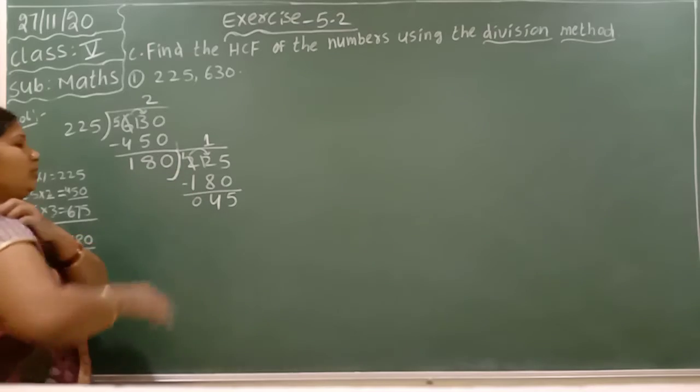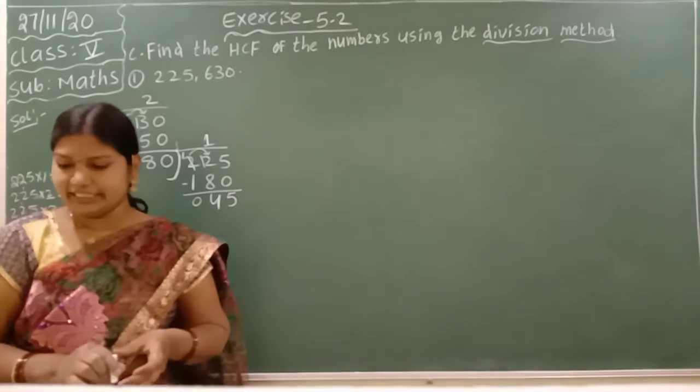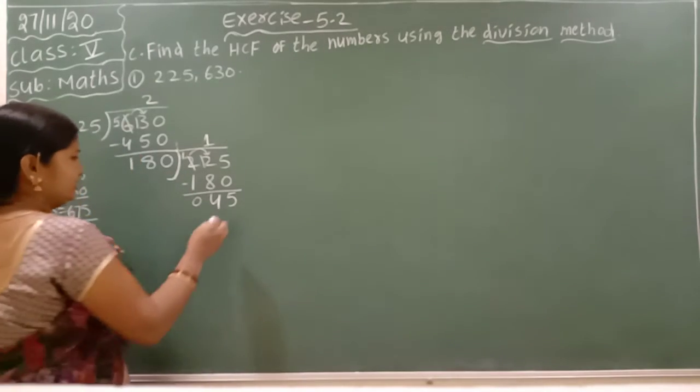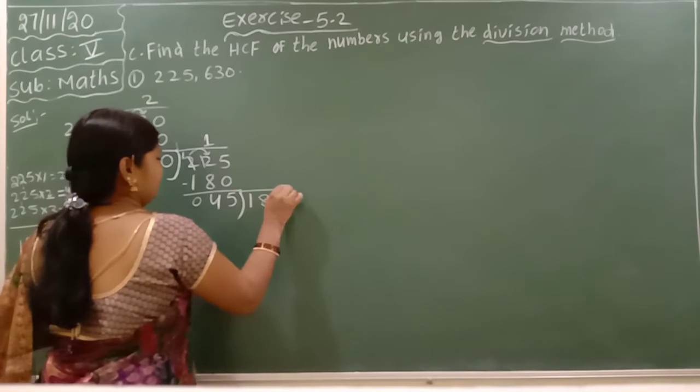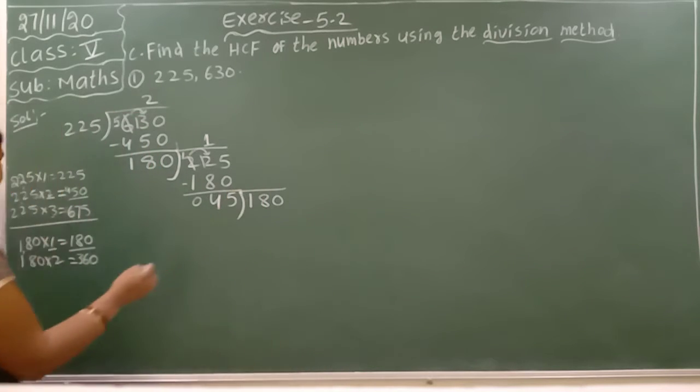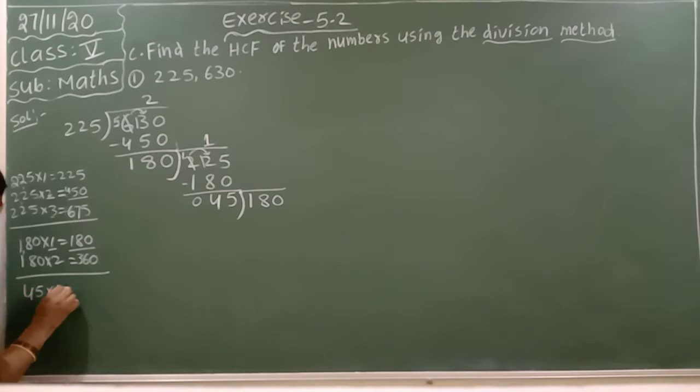45 to do one more time, subtraction here. Now we have to write the 45 table. 45 times 1 is 45. 45 times 2 is 90 (5 times 2 is 10, 2 times 4 is 8 plus 1 is 9).